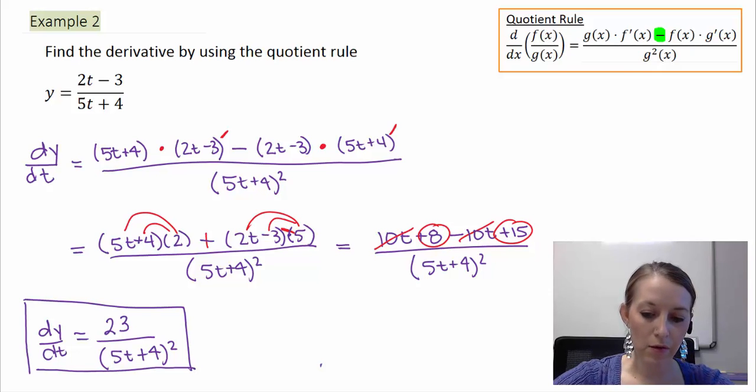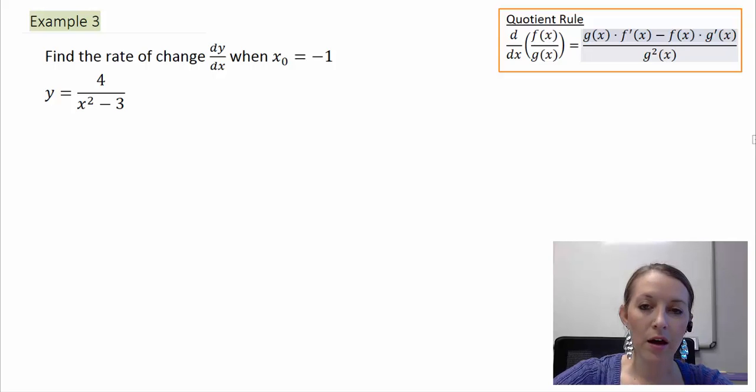Okay, so now that we've seen another example using the quotient rule, let's move on to yet another one. This one here asks us to find the rate of change, dy over dx. And we need to do that when our x naught variable is equal to negative 1.